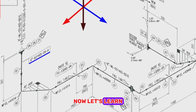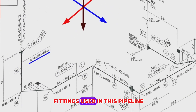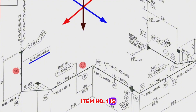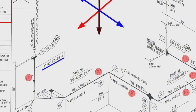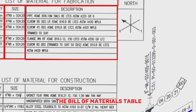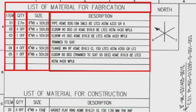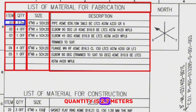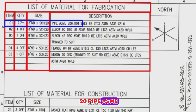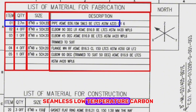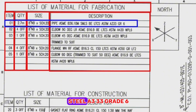Now let's learn the name and number of pipe fittings used in this pipeline. Item number 1 is shown in several places on this pipe drawing. Looking at the Bill of Materials table: Item number 1, the quantity is 2.7 meters, size 8 inches, schedule 20, pipe, ASME seamless, low-temperature carbon steel, A333, grade 6.